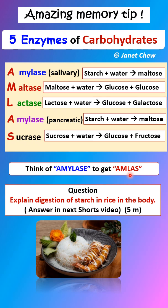The five enzymes of carbohydrates and their functions: A is for amylase — salivary amylase — which hydrolyzes starch to form maltose in the mouth. M is for maltase, which hydrolyzes maltose to form glucose and glucose in the ileum or small intestine. L is for lactase, which hydrolyzes lactose to form glucose and galactose in the ileum or small intestine.